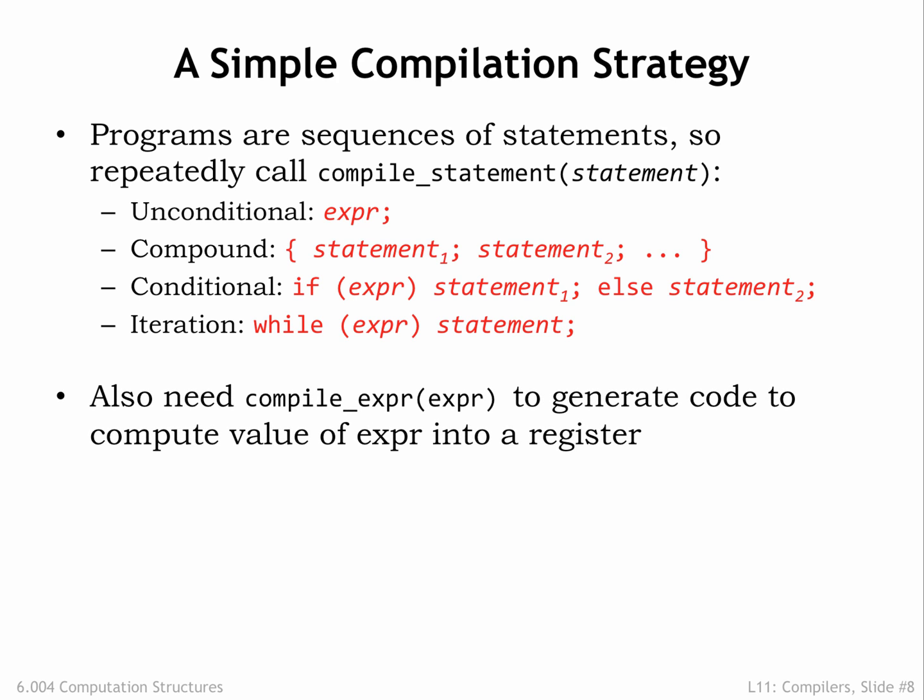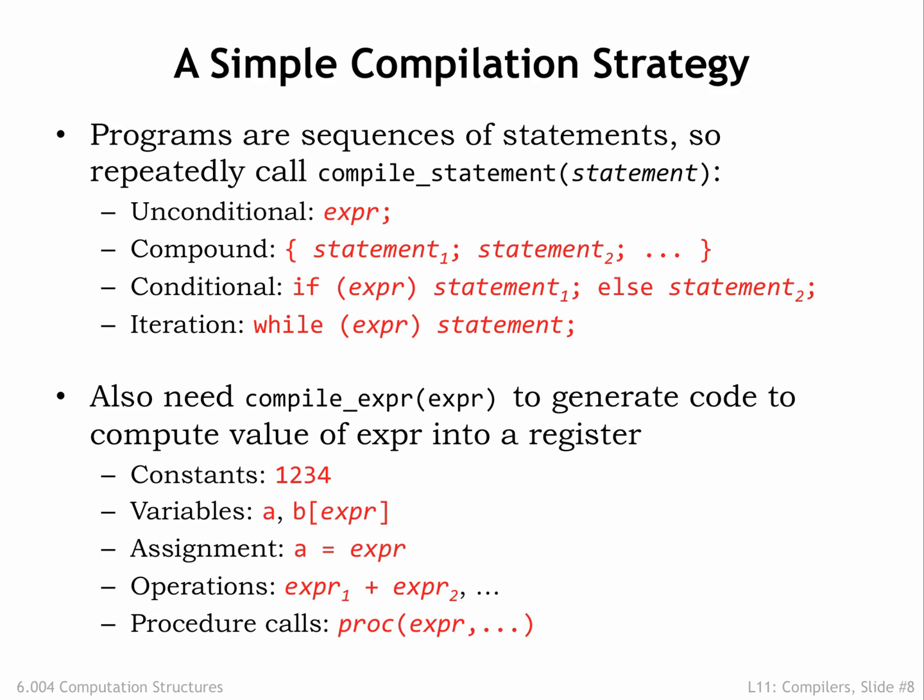The other main routine is compile-expression, whose job it is to generate code to compute the value of an expression, leaving the result in some register. Expressions take many forms: simple constant values, values from scalar or array variables, assignment expressions that compute a value and then store the result in some variable, unary or binary operations that combine the values of their operands with a specified operator. Complex arithmetic expressions can be decomposed into sequences of unary and binary operations. And finally, procedure calls, where a named sequence of statements will be executed with the values of the supplied arguments assigned as the values for the formal parameters of the procedure.